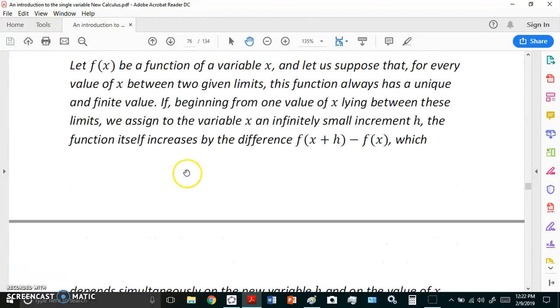So what it says is: let f(x) be a function of a variable x and let's suppose that for every value of x between two given limits this function always has a unique and finite value. Well I don't know how any value cannot be finite. That seems to be like an oxymoron to me. If beginning from one value of x lying between these limits we assign to the variable x an infinitely small increment, now I want you to notice that Cauchy said infinitely small increment.